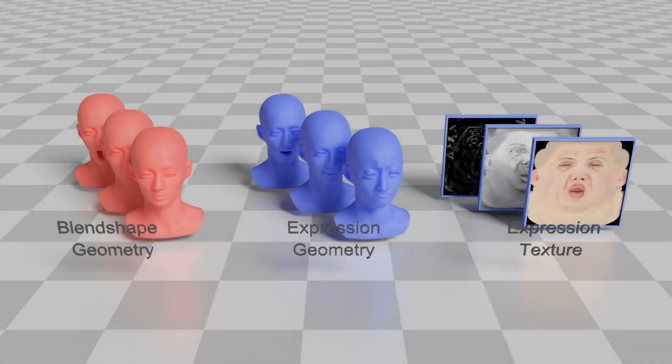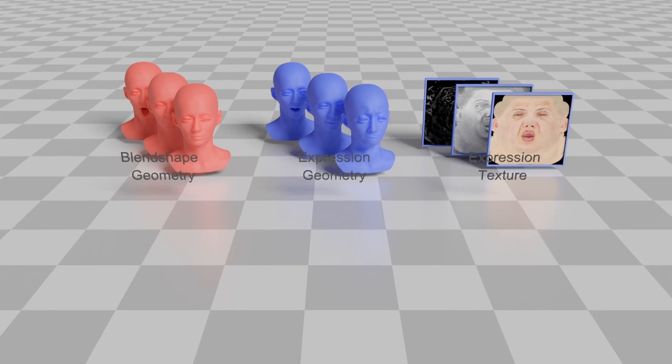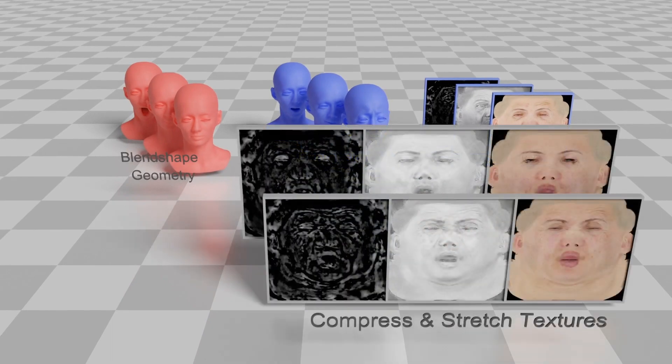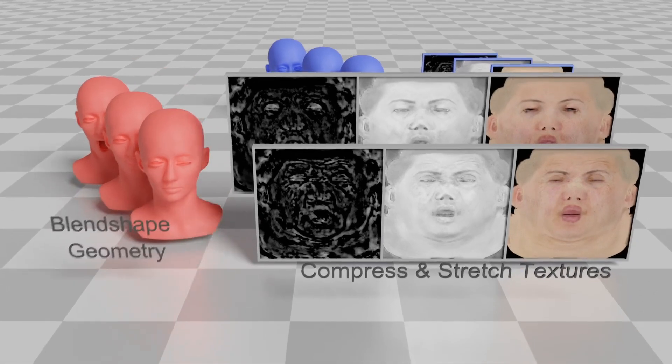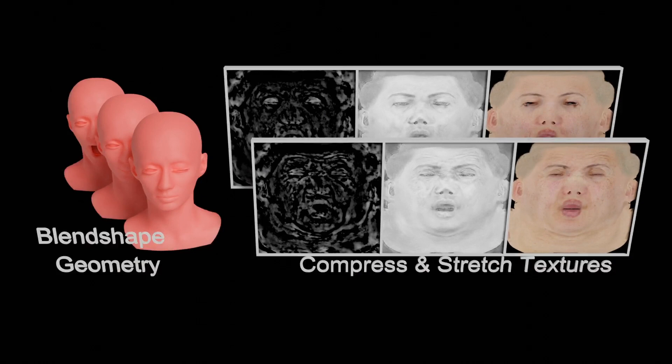We generate the compress and stretch texture assets by blending the expression textures guided by the influence maps of the expression geometries. Our four dynamic facial assets consist of the blend-shape geometry and the compress and stretch textures, which can be used to render realistic expressions and animations.